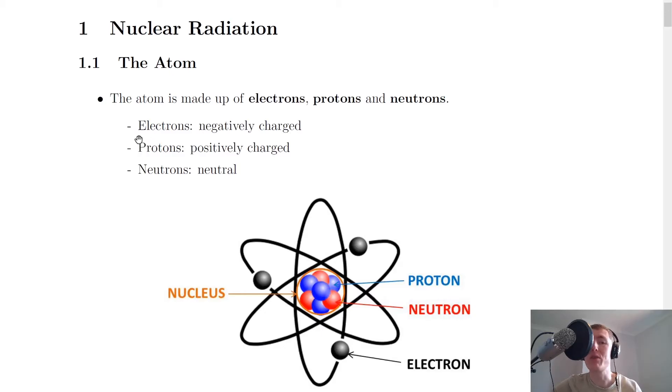And the way I like to remember that is the P in protons matches up with the P in positively and for neutrons the N there matches up with the N in neutral. So you've got an N, N and a P, P and then the odd one out is going to be the electrons with negatively charged.